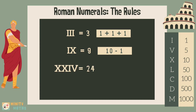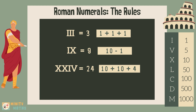For the number 24, we have two Xs, which are equal to two 10s. The next largest number is V, with an I before it, which means we take one away from 5, giving us 4. So we can then add the two 10s and the 4 to make 24.